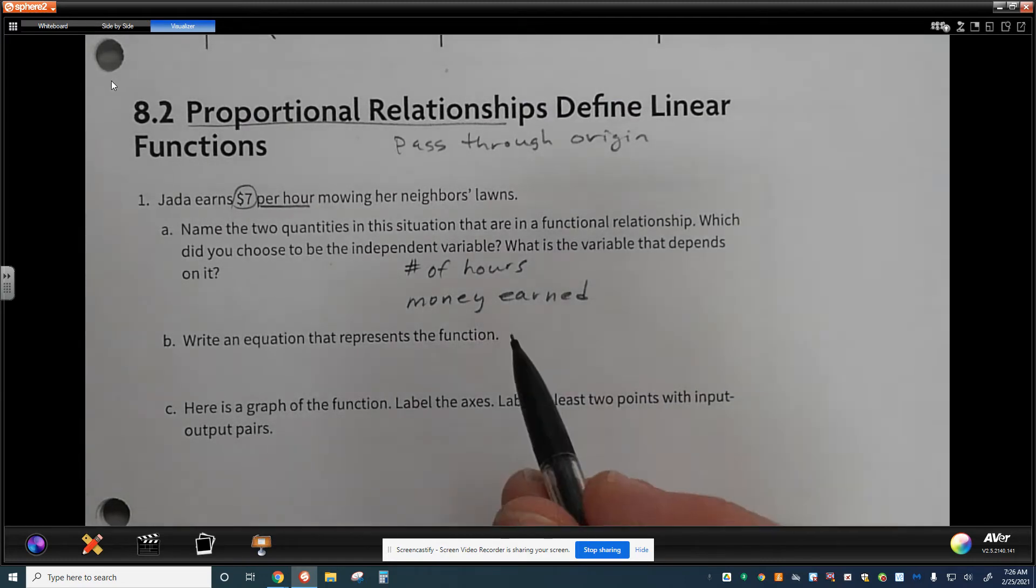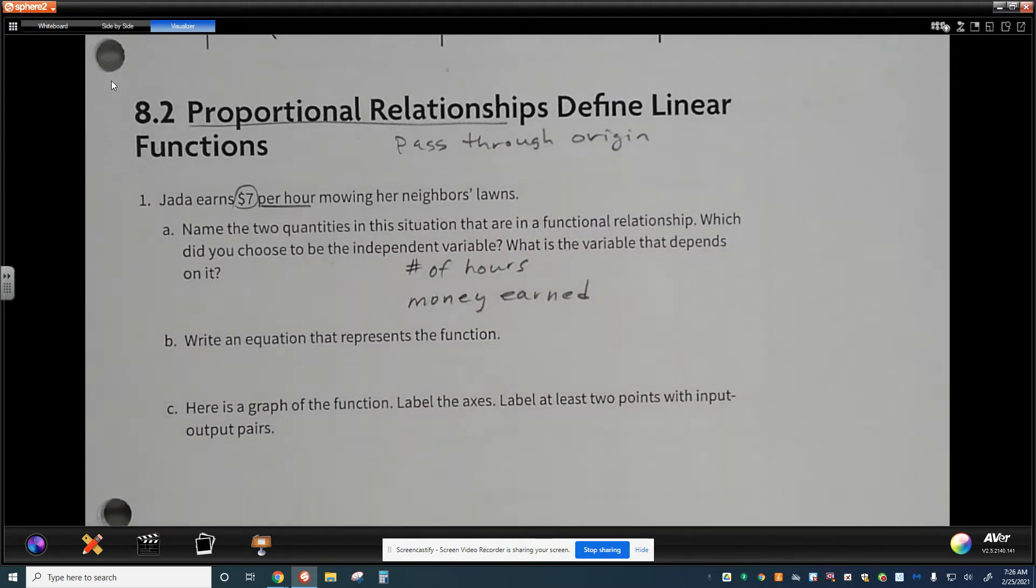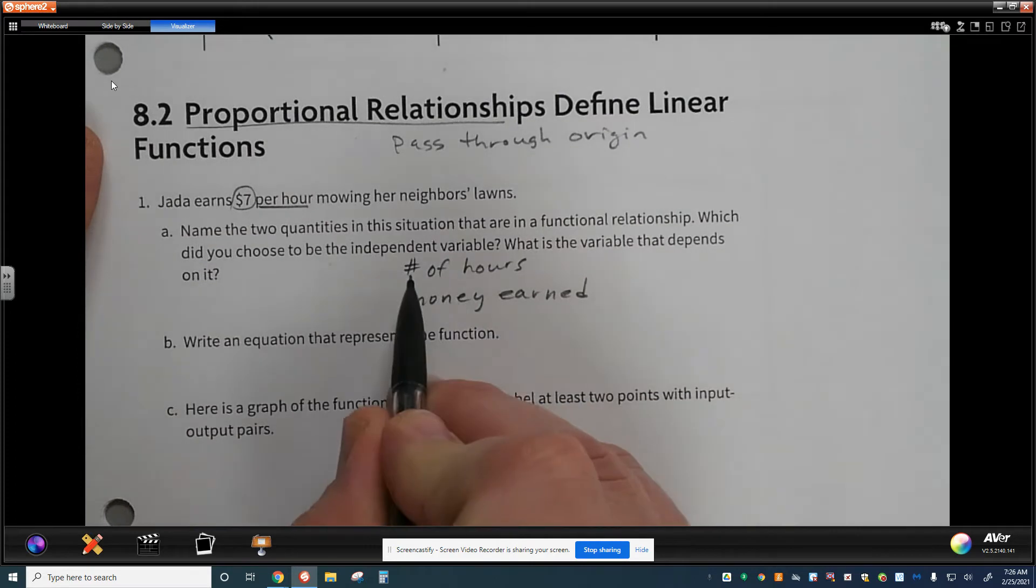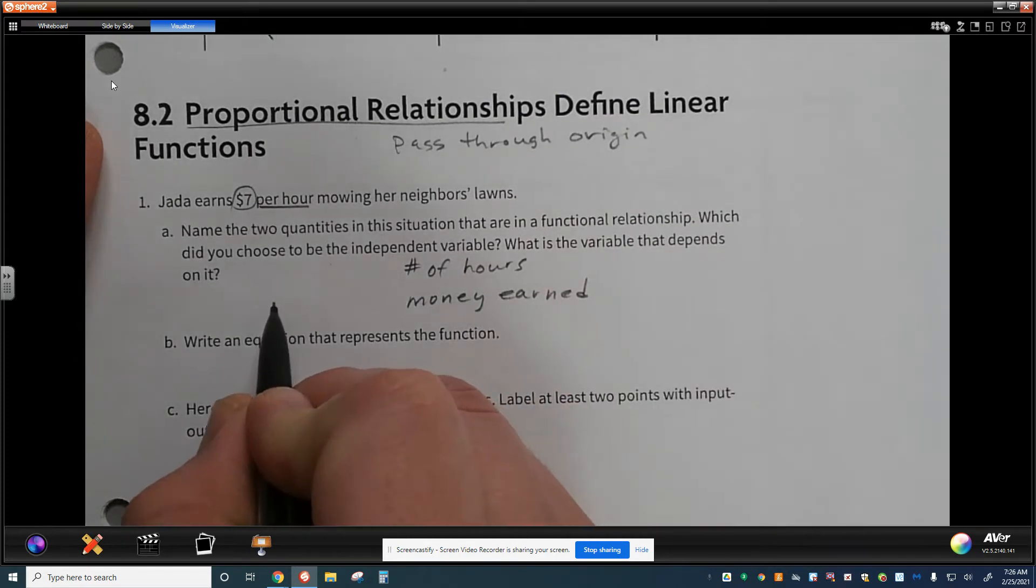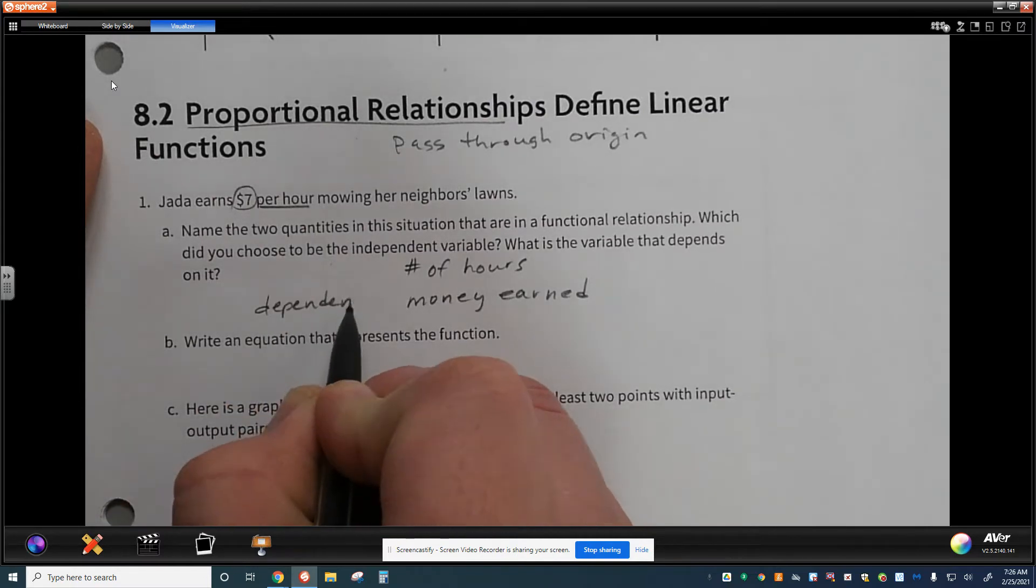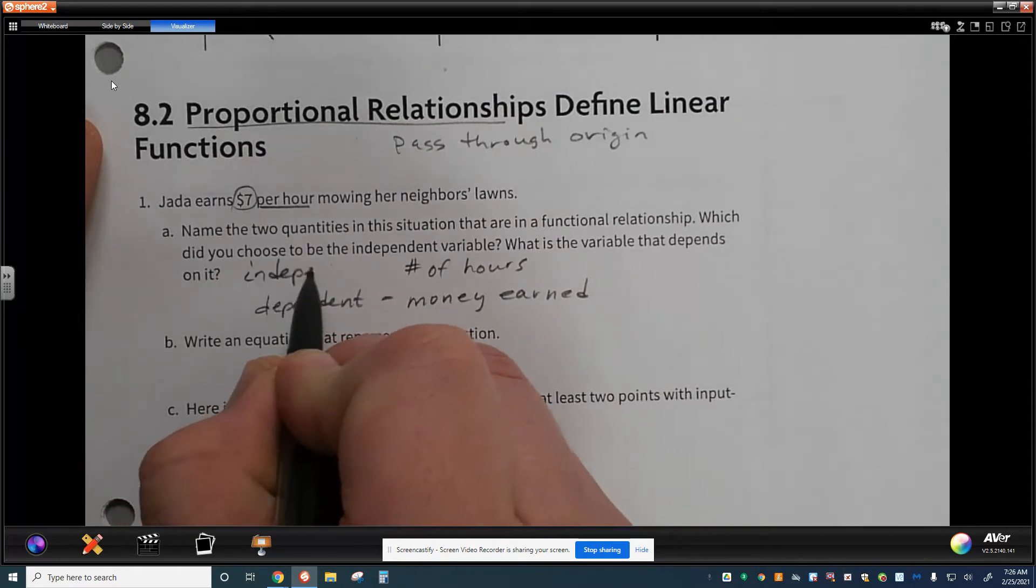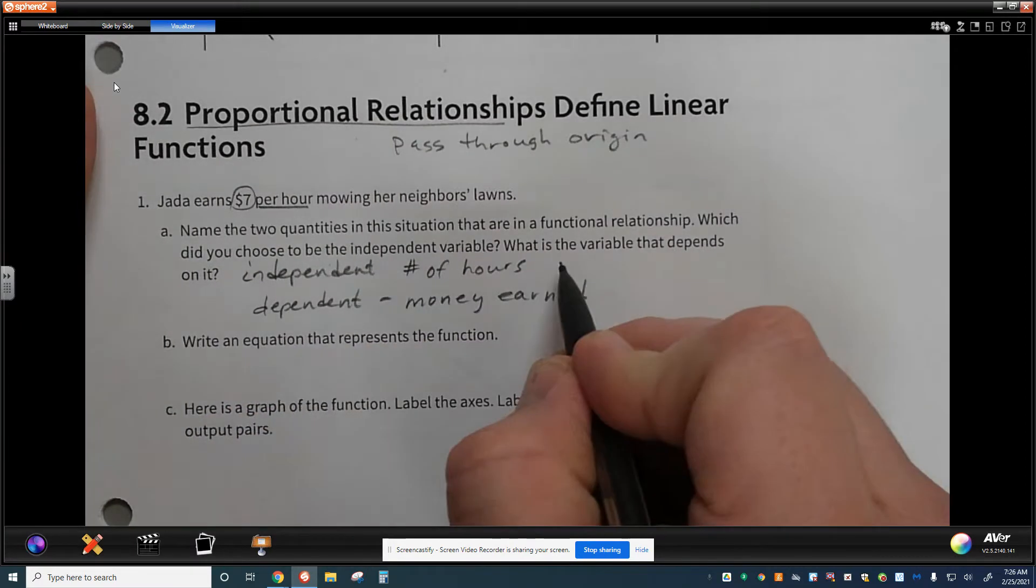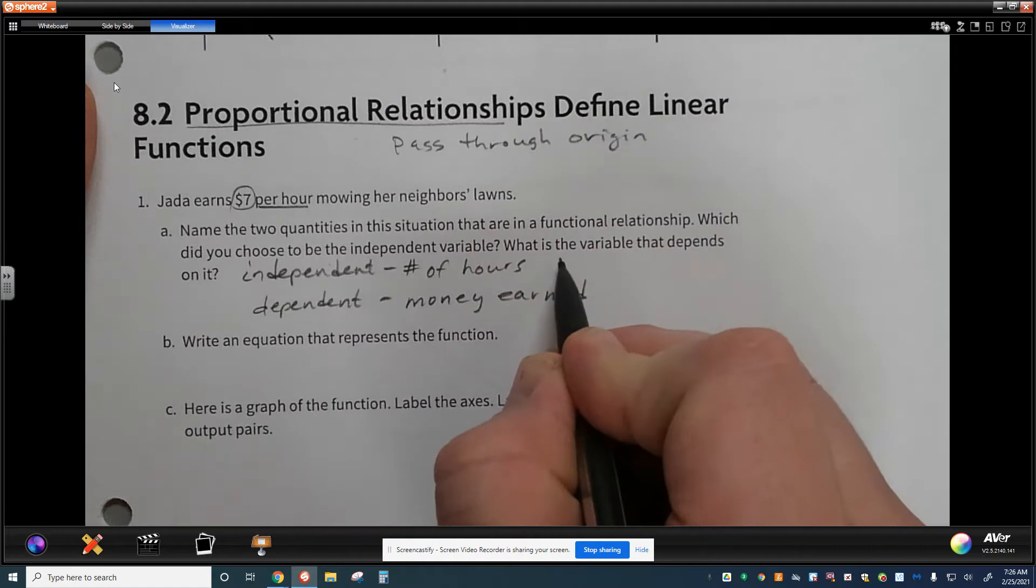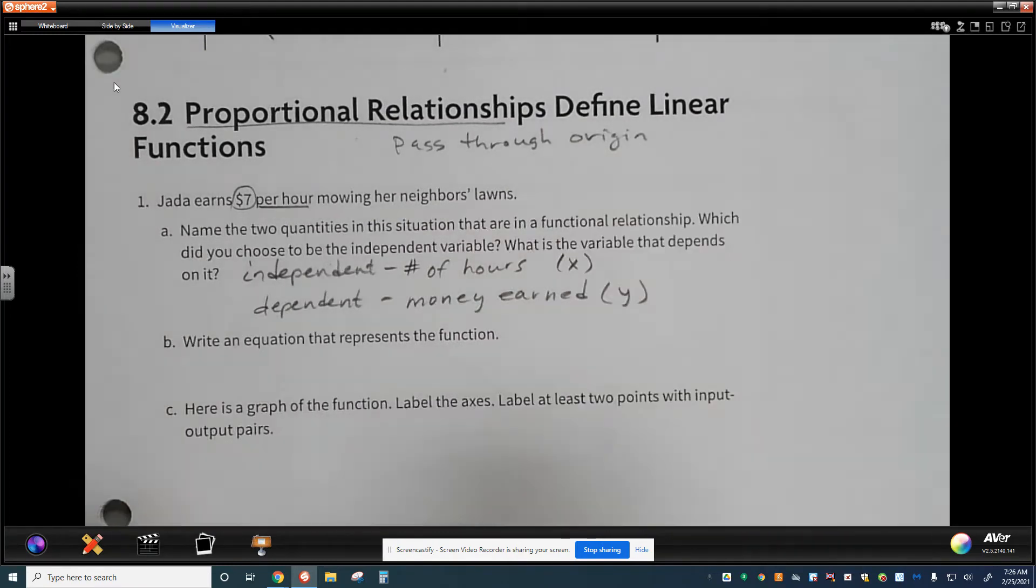With these two quantities, I have to think about which one is independent, so which one stands alone, and which one depends on the other. Now, obviously, she can't make money if she doesn't work. So the money earned has to be the dependent variable. And that would leave the time as the independent variable. I know that the independent variable is the number of hours, is our x variable. And dependent would have to be y.